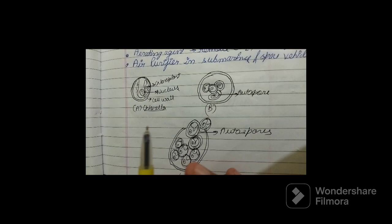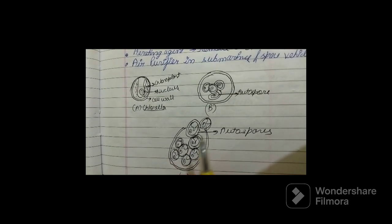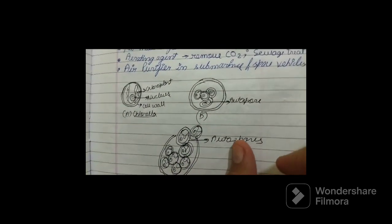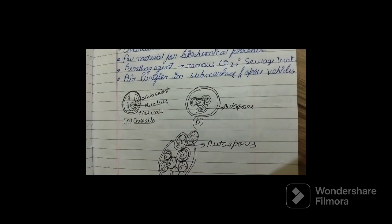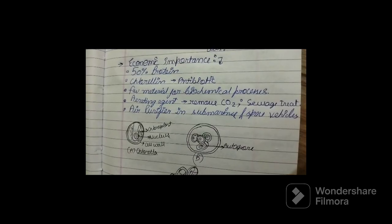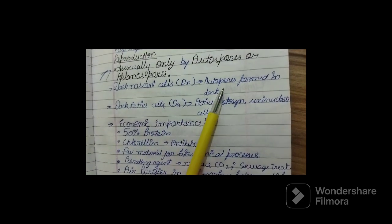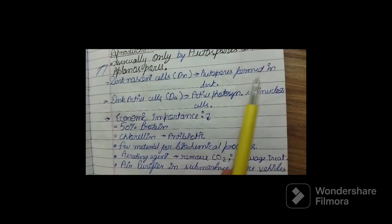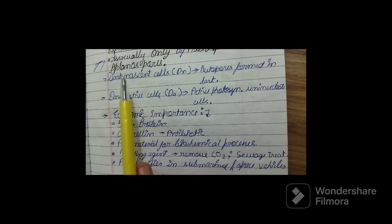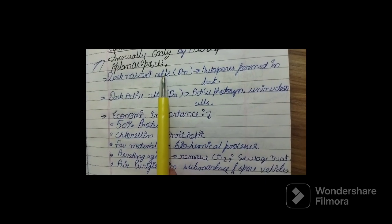These divisions can occur in light as well as in dark. So as you can see here, the aplanospores or autospores that are formed in the dark are called dark nascent cells.